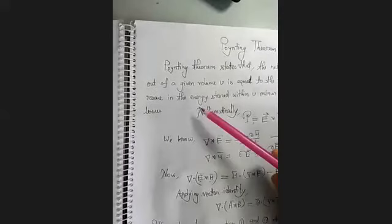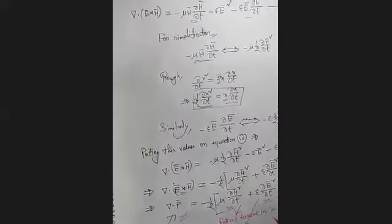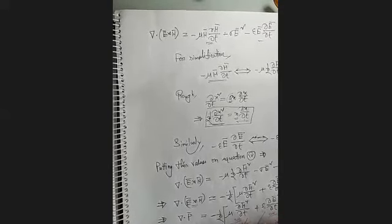The Poynting theorem states that the net power flowing out of a given volume V — that means any closed surface — is equal to the time rate of decrease in energy stored, meaning the decrease in electric field energy plus the decrease in magnetic field energy, both summed within V, minus the conduction losses or ohmic losses.